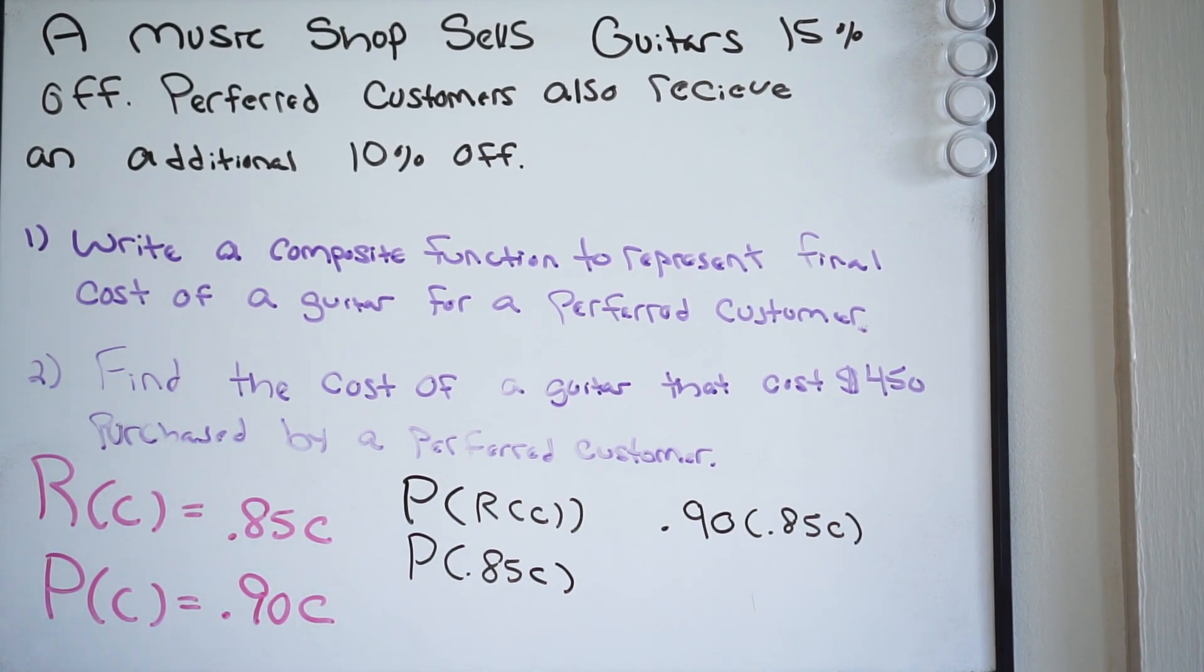And so what that is going to give us is the following. We'll have P compose R of C is going to equal, well, let's figure out what this is here.